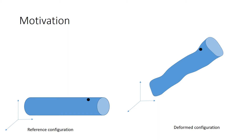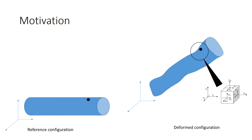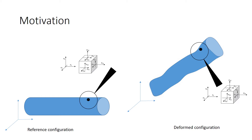In the deformed configuration, the Cauchy stress tensor at the material point represented by the black dot can be examined by looking under a magnifying lens. The components of this Cauchy stress tensor will be dependent on the coordinate system chosen, and large deformations can be complicated to relate to the actual directions within the material. In certain situations, it is simpler to view the stresses in the reference configuration, where they are aligned with the natural directions of the object.